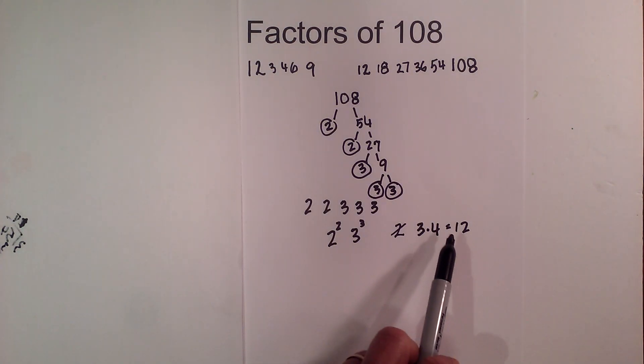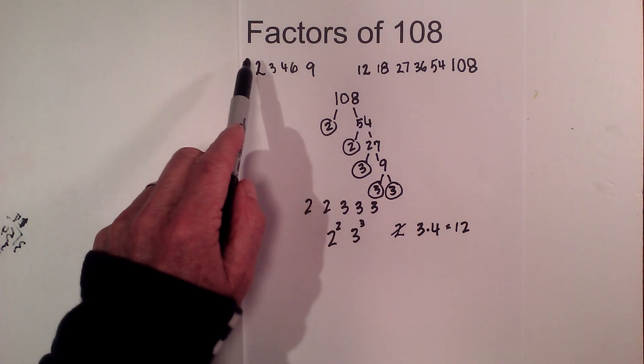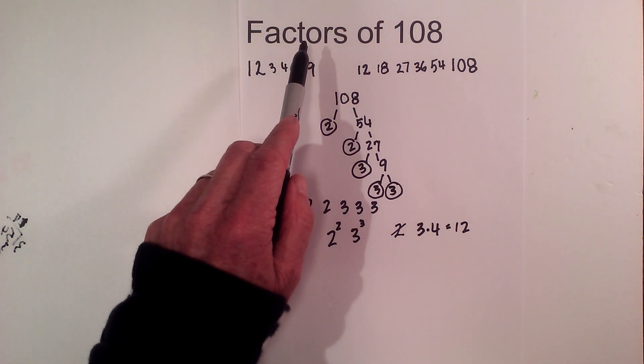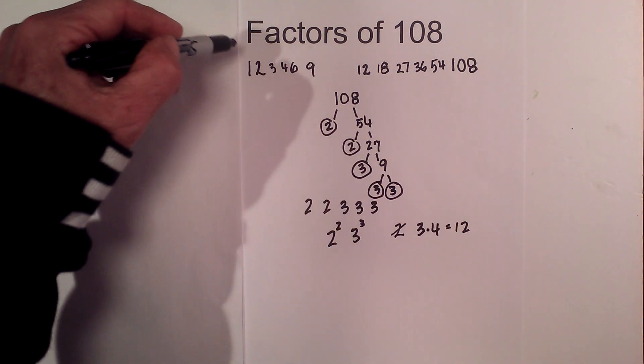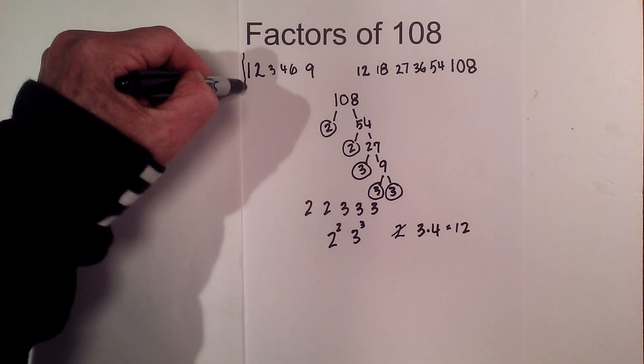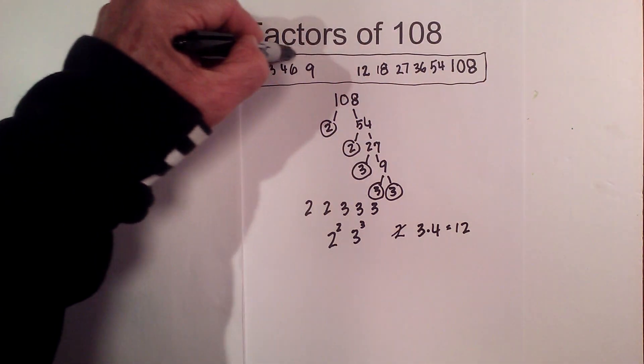So that tells you that you will have 12 factors in 108. So let's count: 1, 2, 3, 4, 5, 6, 7, 8, 9, 10, 11, 12. So I know that these will be the factors of 108.